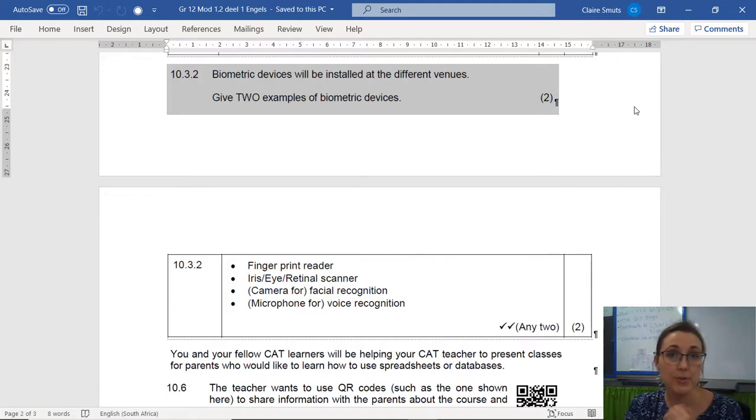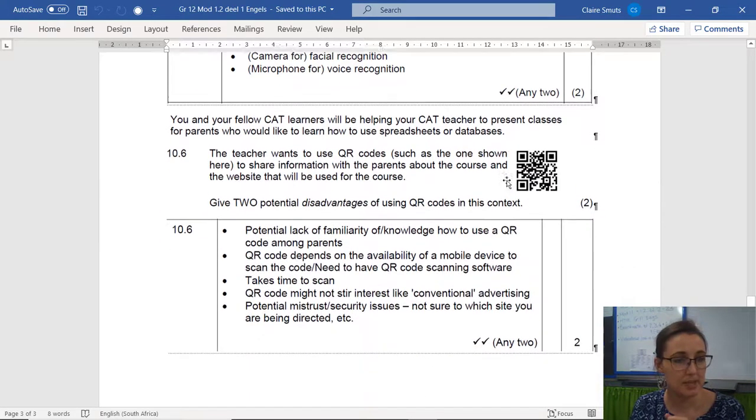Two examples, voorbeelde, of biometric devices. A fingerprint reader. Not what is it reading. Examples of the devices. Fingerprint itself wouldn't have been correct. The reader. Fingerprint scanner is also fine. An iris or an eye or a retinal scanner or a camera is correct. A microphone is correct because those are the devices, not what it's scanning. You can include what it's scanning, the fact that it's facial recognition or voice recognition or iris recognition. But the crux of the matter is what are the devices that it's actually using. Please pay special attention to that.